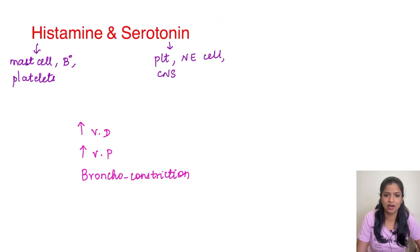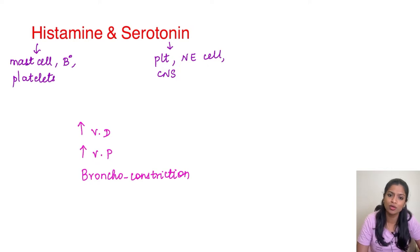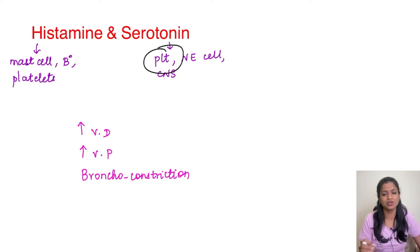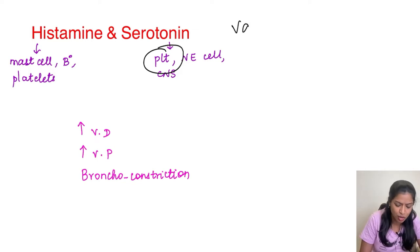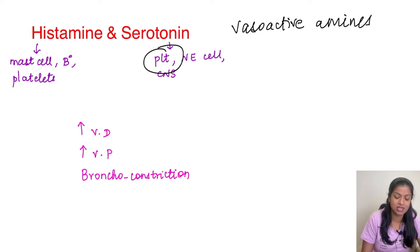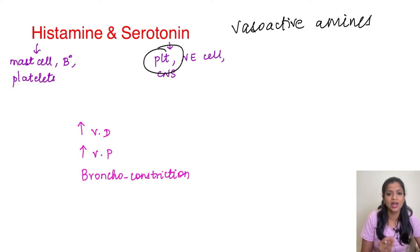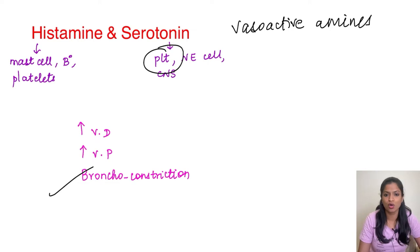Starting with histamine and serotonin — these are pre-formed mediators. Histamine is going to be produced by the basophils and the mast cells, while serotonin is going to be produced by the platelets. Both of these mediators have their major action on the vessels and that is why they are labeled as vasoactive amines. Both histamine and serotonin are responsible majorly for vasodilatation and vascular permeability, and apart from that they also cause bronchoconstriction.